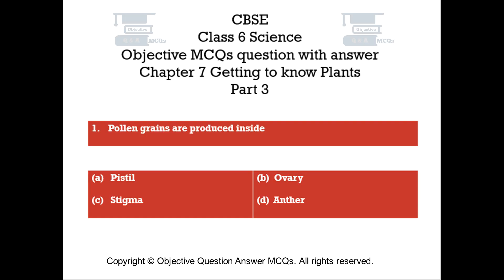Question number 1. Pollen grains are produced inside. Option A: Pistil. Option B: Ovary. Option C: Stigma. Option D: Anther.